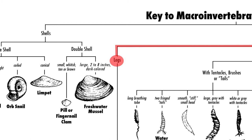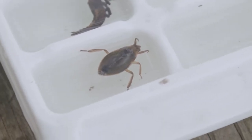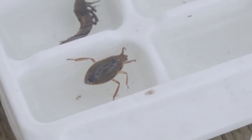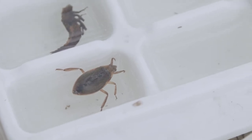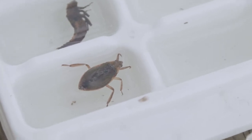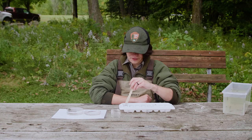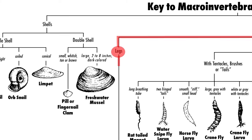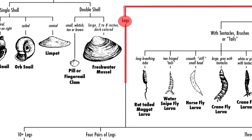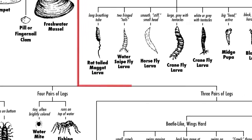The next question we have is: how many legs does it have? How many pairs of legs? One, two, three, four, five, six legs — I count. So that means three pairs of legs.